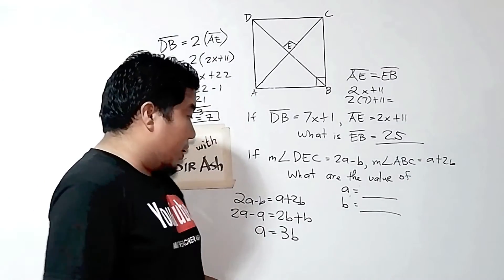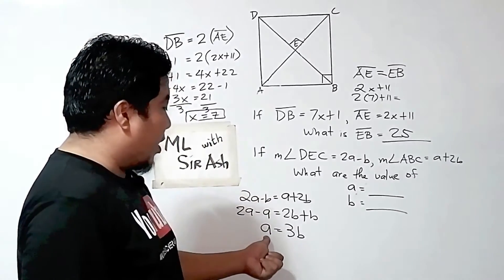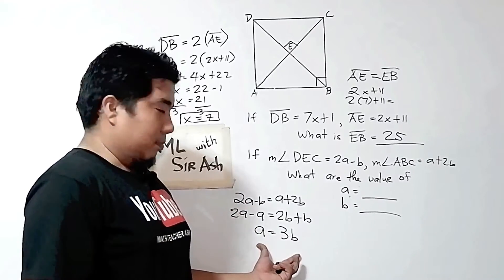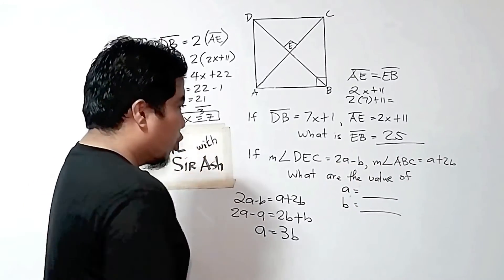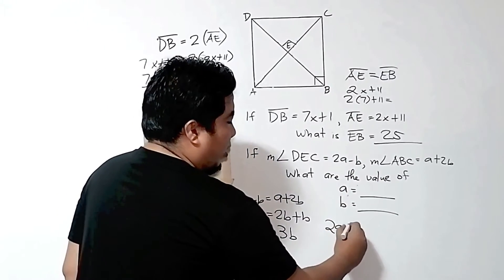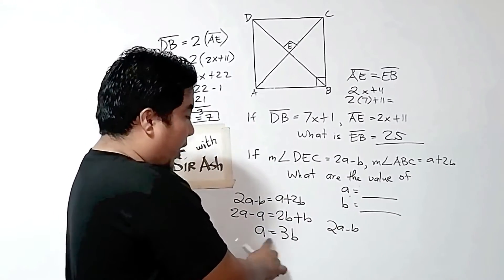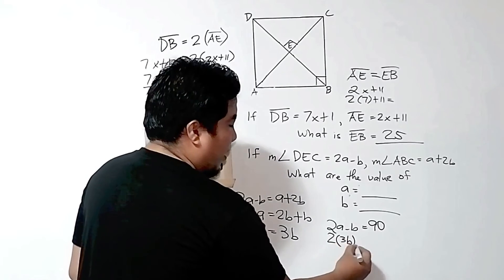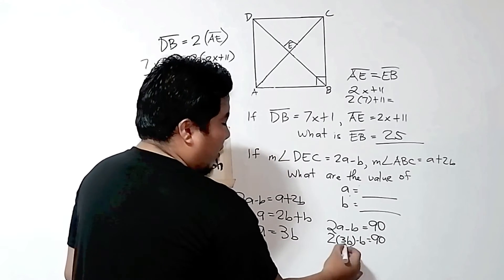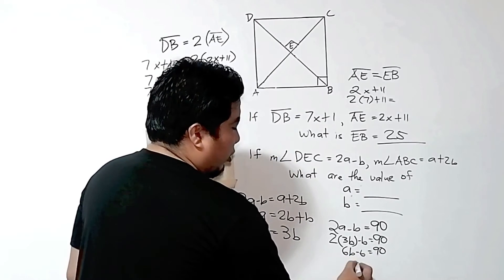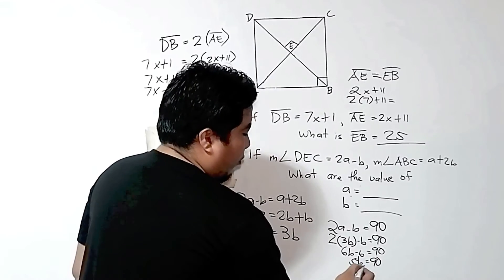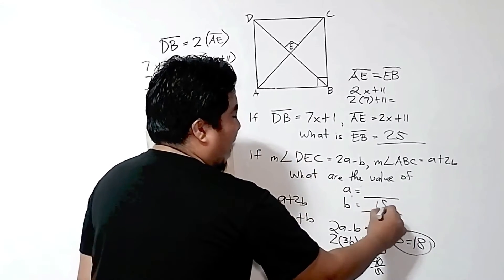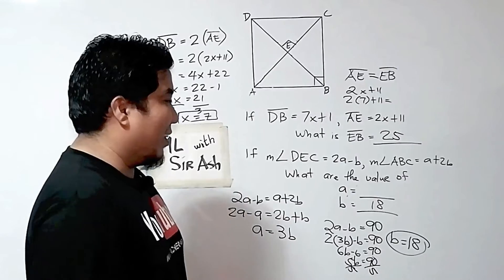We have not yet found the actual value because A equals 3B is still an expression. But we can substitute this into 2A minus B equals 90: that is 2 times 3B minus B equals 90, giving us 6B minus B equals 90, so 5B equals 90. Dividing both sides by 5, B equals 18 units.